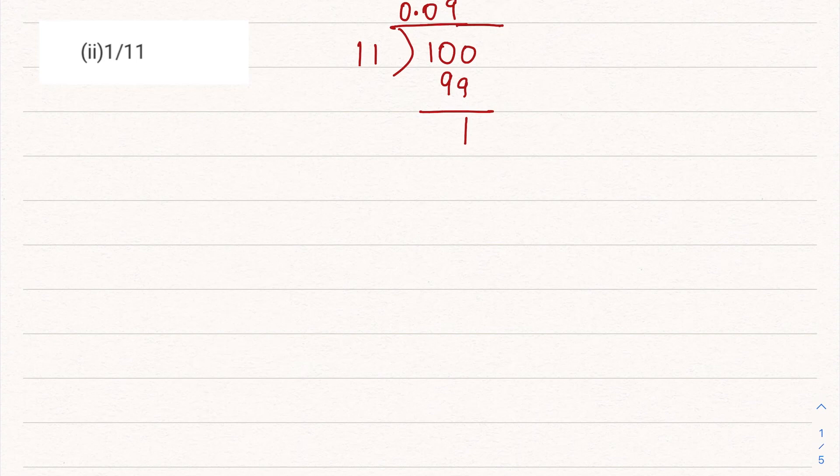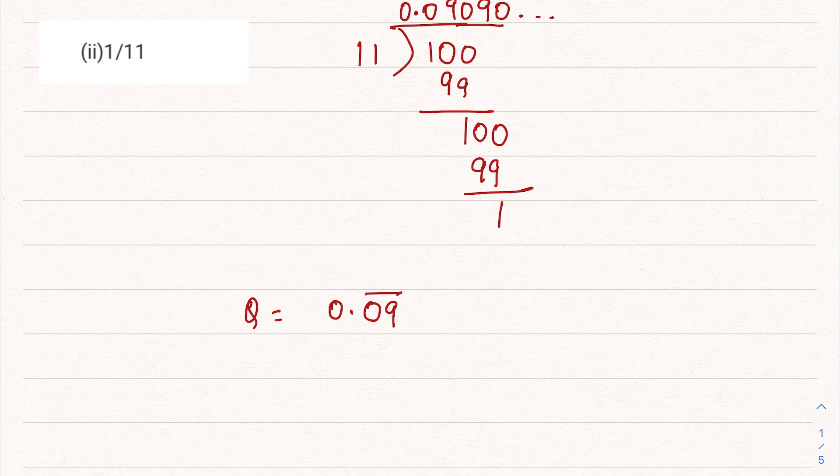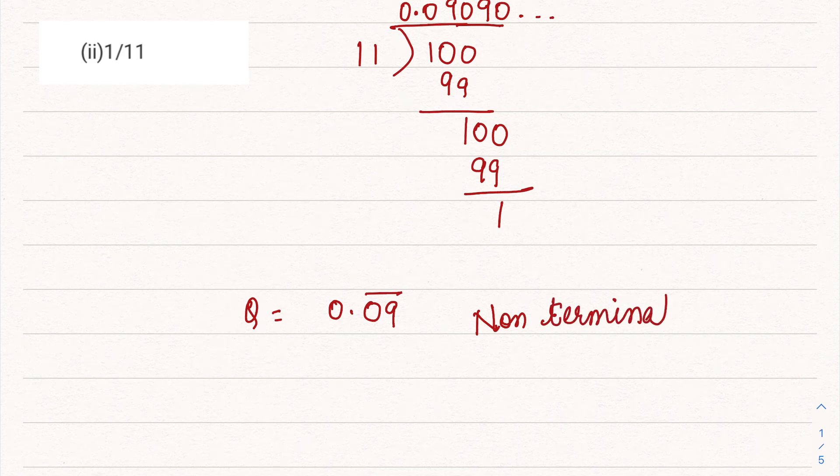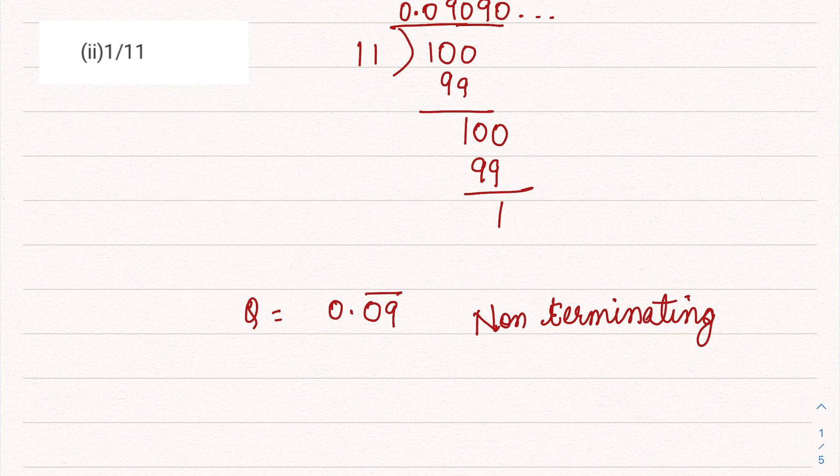Now 11 nines are 99, so we get 1 as a remainder. We need another zero, so we make it again 100. Again nines are 99, we again get 1. So this will continue. In this case, the quotient is 0.09 bar bar, means this 0.09 is continuously repeating. So this is a non-terminating decimal where the remainder is never zero. Since 0.09 is repeating, this is also a repeating decimal expansion. This one is non-terminating and repeating decimal expansion.